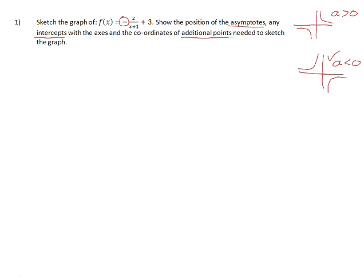Now we need to determine the position of the vertical and horizontal asymptotes. The vertical asymptote is found by looking at the p-value. Because it's x plus 1, our p-value is negative 1, so the vertical asymptote is the line x = -1. Our q-value is positive 3, so the horizontal asymptote is the line y = 3.